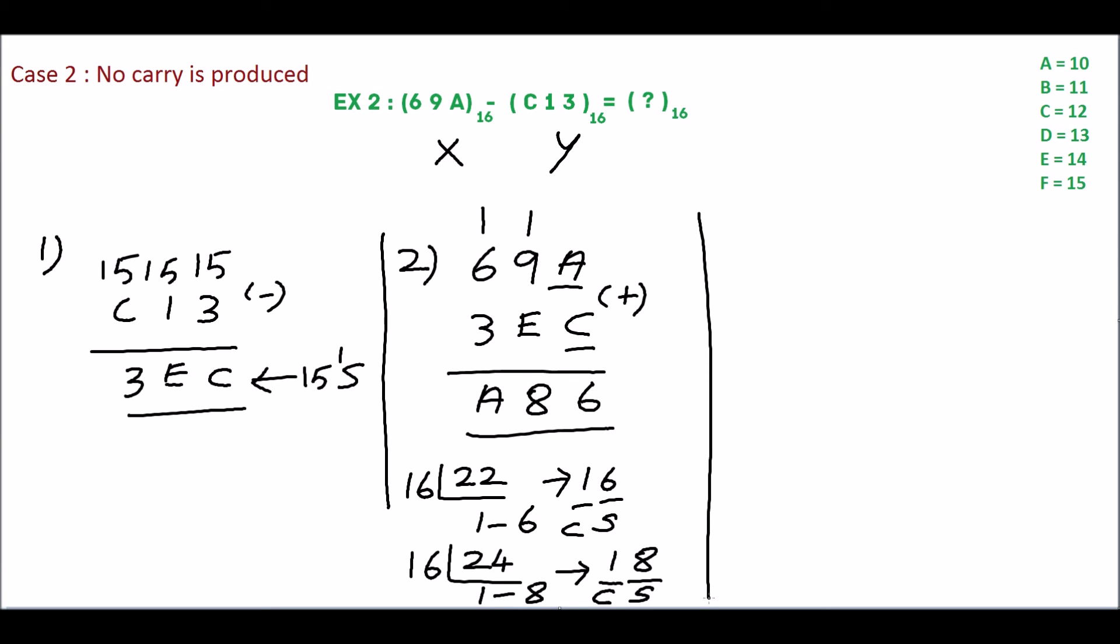In step 2, we don't have any carries. Take 15's complement for this sum. The sum is A-8-6. Take 15's complement, subtract the digits from 15. 15 minus 6 is 9.